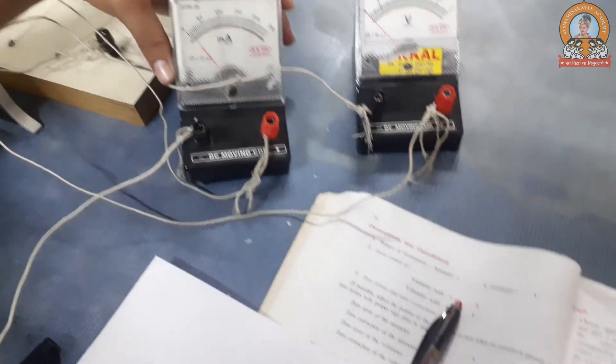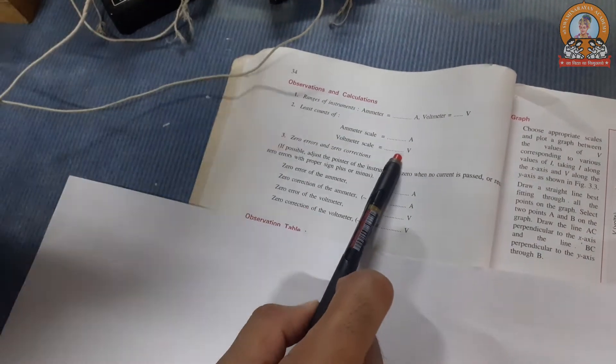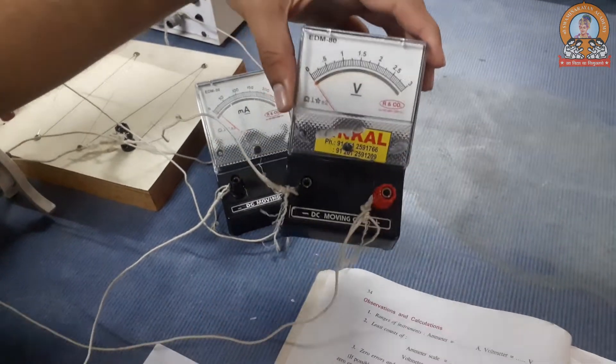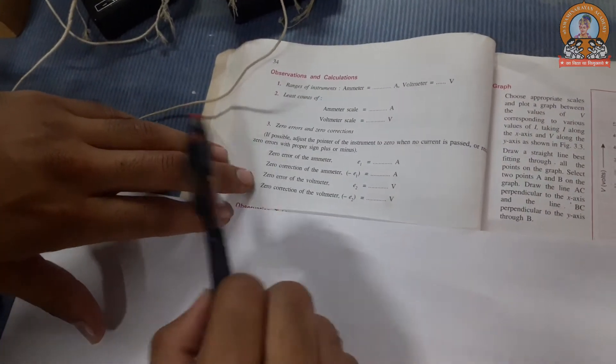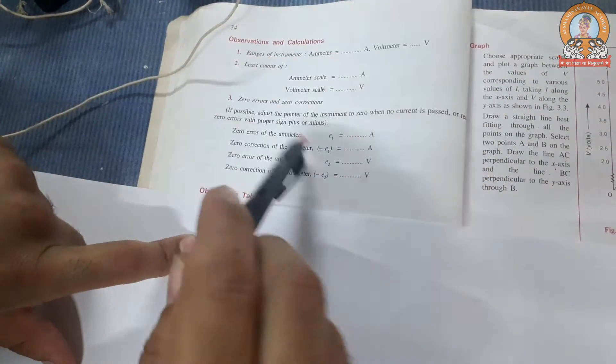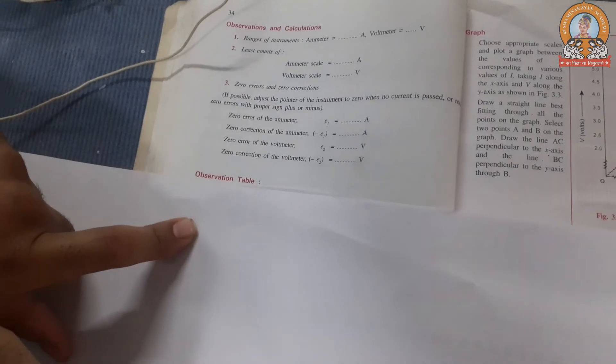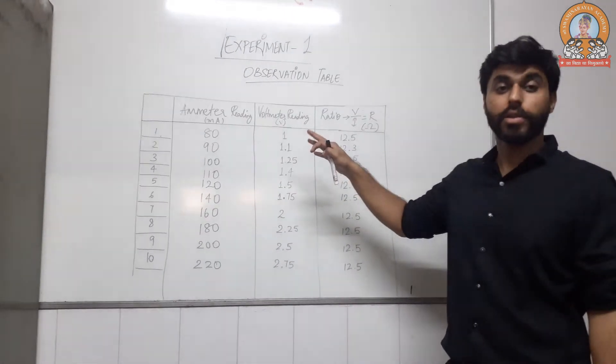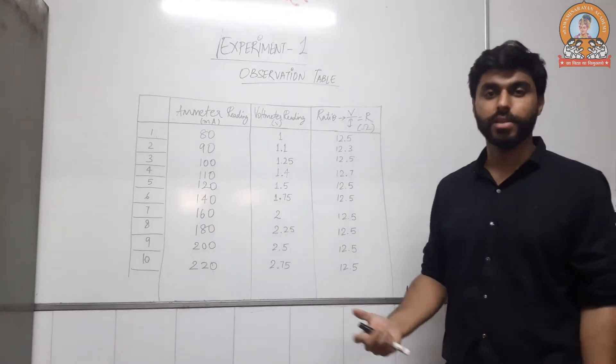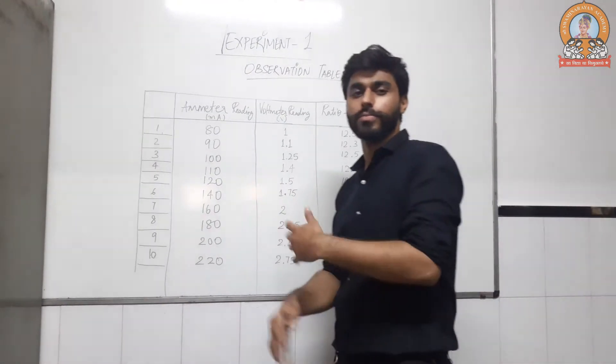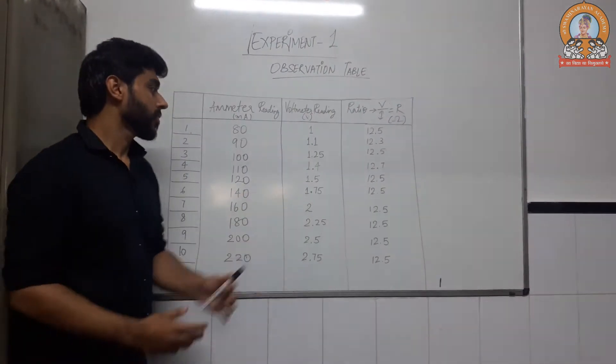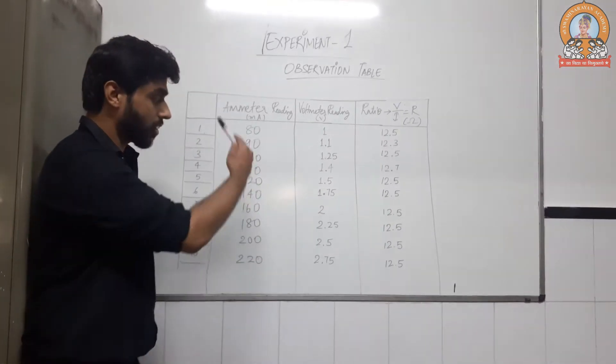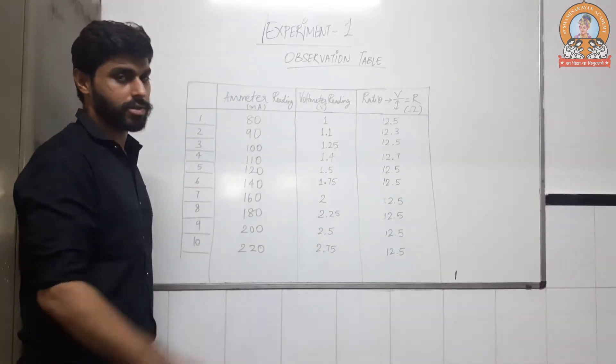For zero error, we don't have any zero error in neither of the instruments, so we won't be calculating this part. In your journal you will see there are two more columns in the observation table for corrected currents and voltmeter readings. But we don't have a corrected option, so just work like this. So in our reading we got every 10 readings according to this. Pause this video and write complete all these things.